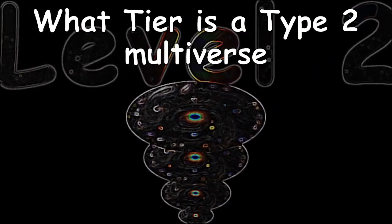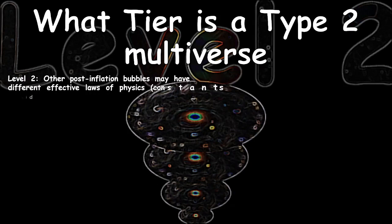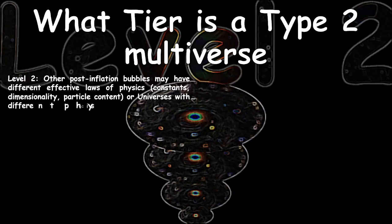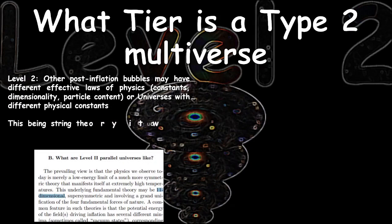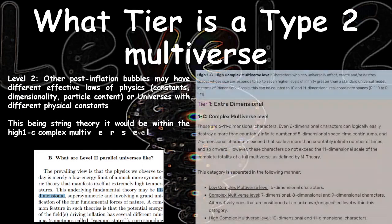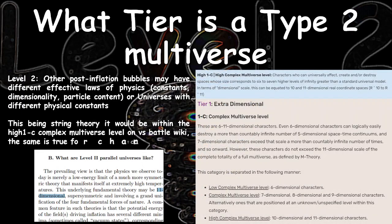What tier is a Type 2 multiverse? As we said before, a Type 2 multiverse is basically string theory — 11 dimensional. This would be High 1C, Complex Multiversal on Versus Battle Wiki, and the same is true for character stats and profile.